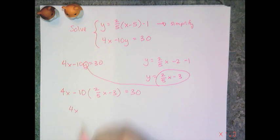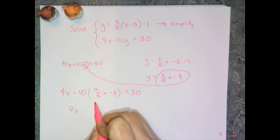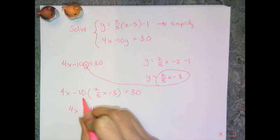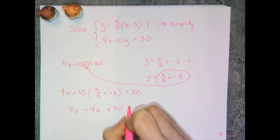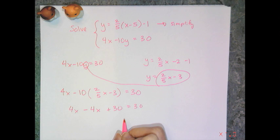So I have 4x and I need to distribute negative 10, and negative 10 times 2 fifths is negative 20 over 5 or negative 4x, and then negative 10 times negative 3 is positive 30. And so then I get 4x minus 4x plus 30 equals 30.